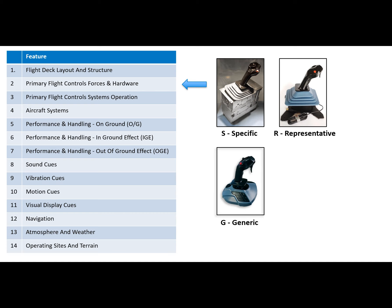Feature number three concerns the primary flight control system operation. At the specific level, the system logic and functions are correct and the control surface deflections match the aircraft. Features two and three enable many kinds of devices — for example, a device with a generic sidestick but specific flight control system operation could be used to train system functionalities like indications, automation, and protections, but such a combination would hardly support training of manual flight handling skills for type rating.